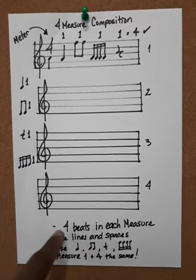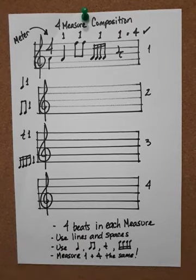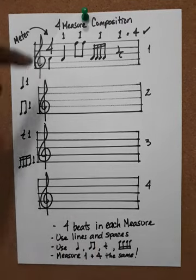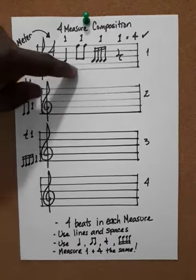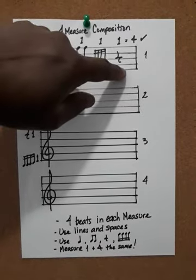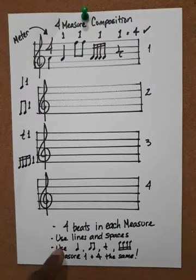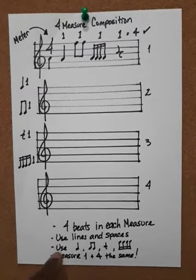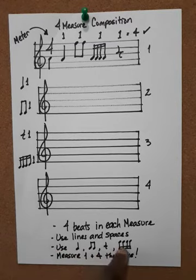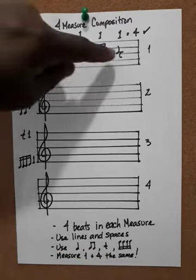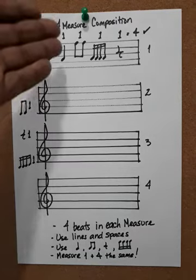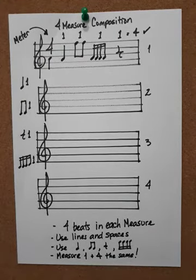Now let's look at the bottom here. Four beats in each measure, okay good. Use lines and spaces, that means don't use the same line all the way across, not good. Use different lines and spaces. Number three down here says use quarter notes, use eighth notes, use rests, and use sixteenth notes. Did I do that? Yes I did. I don't see any half notes here, it's all quarters, eighths, rests, or sixteenths.